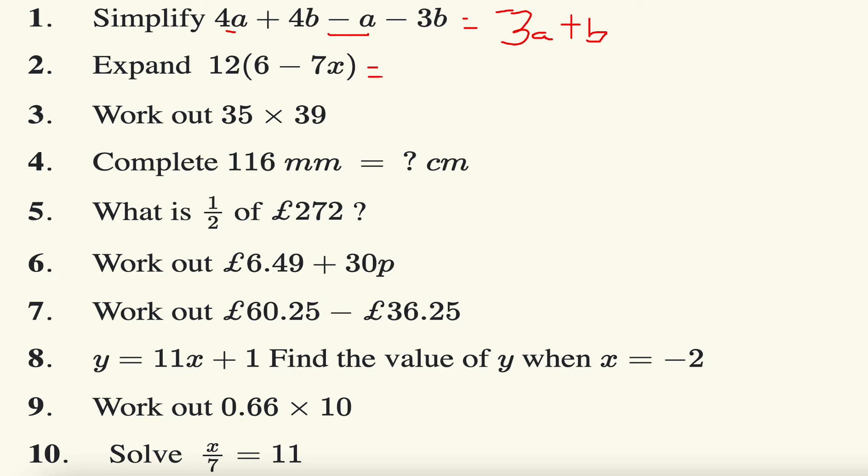Next one, question number two: expand this single bracket. Well, 12 times 6 is 48, 12 times negative 7x is equal to minus 84x, because a positive times a negative is a negative.